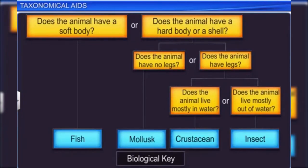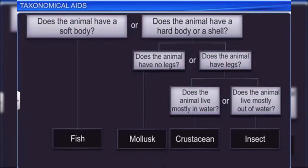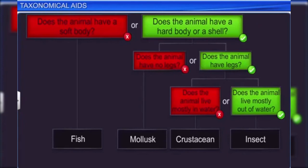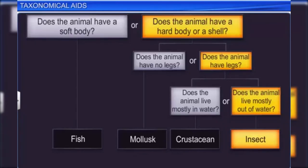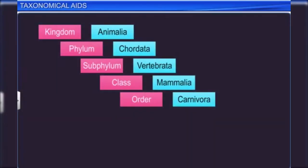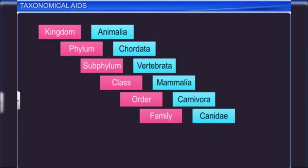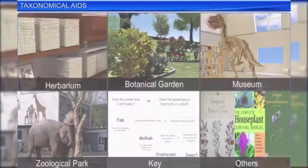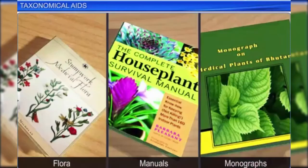A biological key is a taxonomical aid used for identification of plants and animals. It presents contrasting characters in pairs called couplets — one character is accepted and the other rejected — to classify the organism. Separate taxonomic keys are required for each category such as family, genus, and species. Other aids like flora, manuals, and monographs are also used in taxonomic studies.